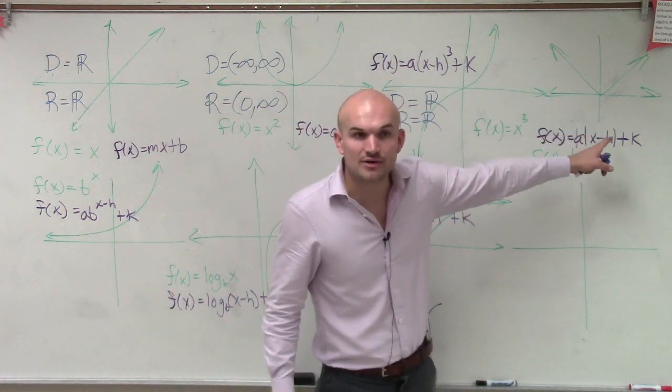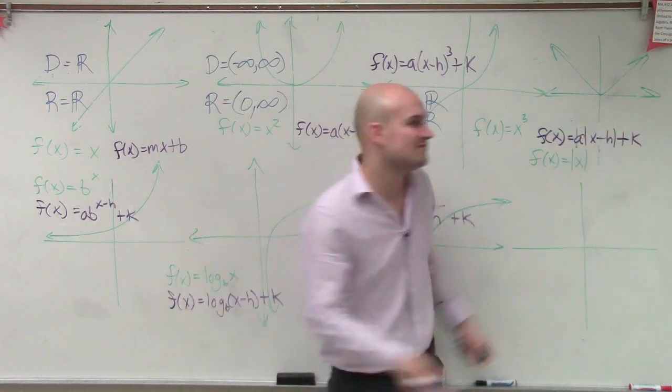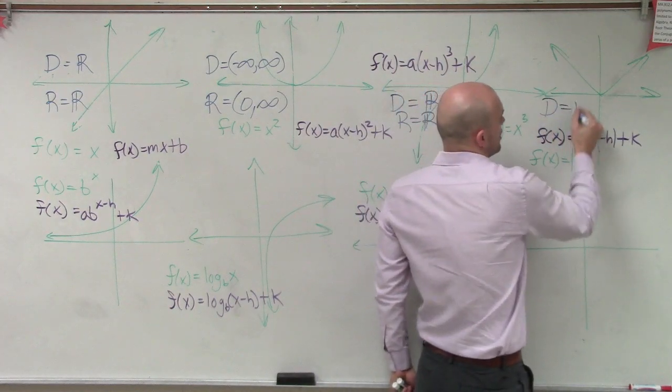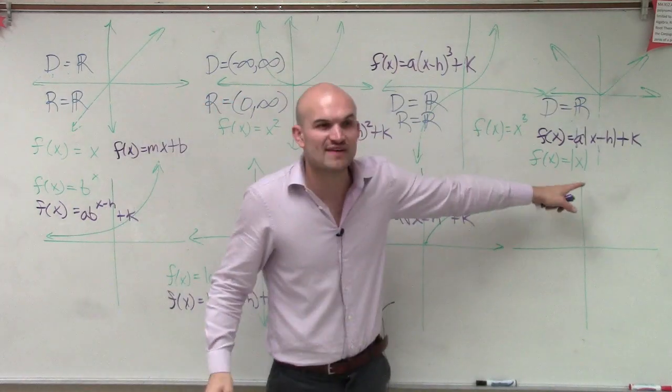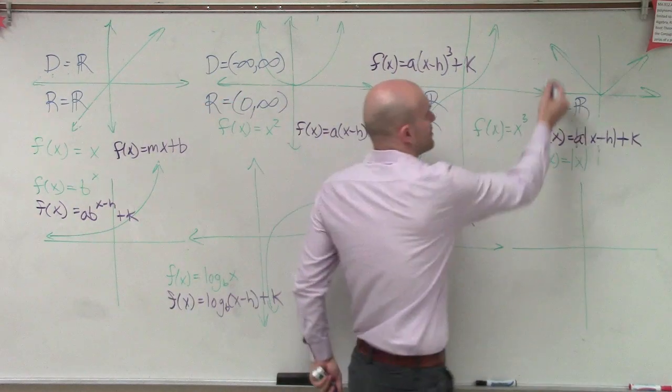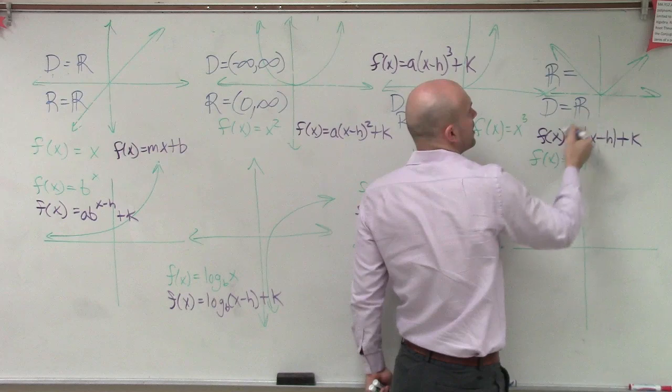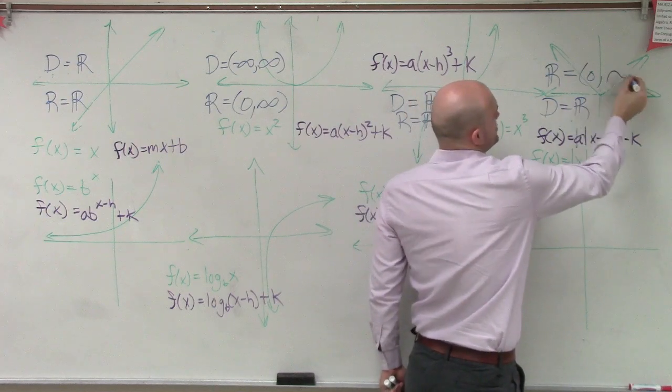When I look at my absolute value, the domain is all real numbers. The range, though, again, has a restriction like the quadratic. You can't take the absolute value of a number and make it negative. So the range is going to be from 0 to infinity.